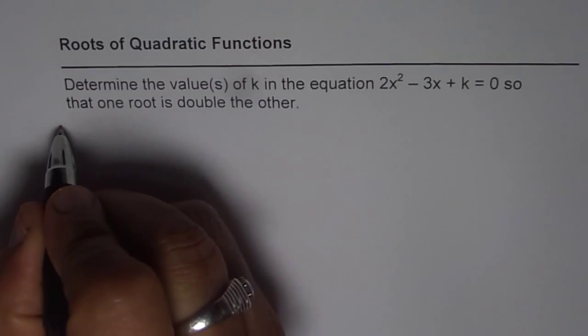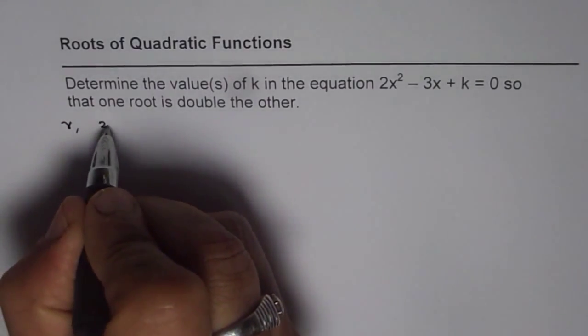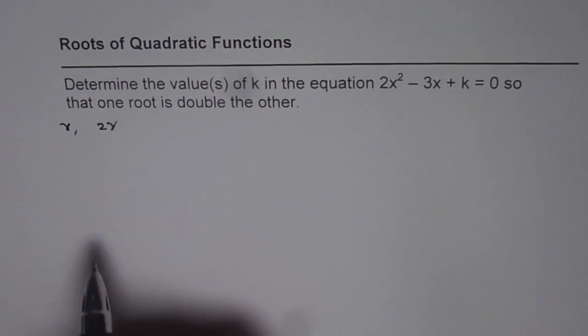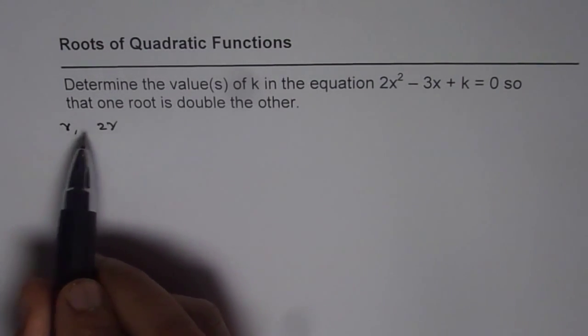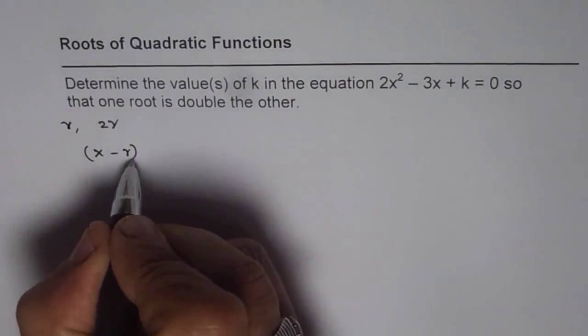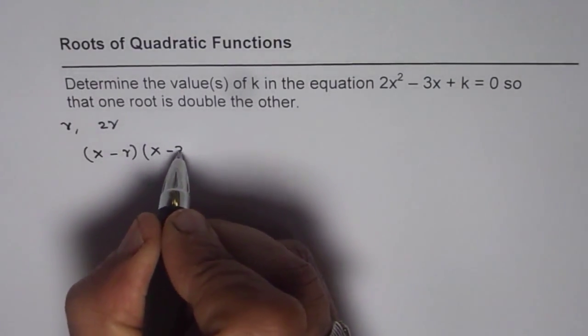Let the roots be r and 2r. Since one is double of the other, the ratio is 1 is to 2. If the roots are r and 2r, then the quadratic equation should be x minus r times x minus 2r.